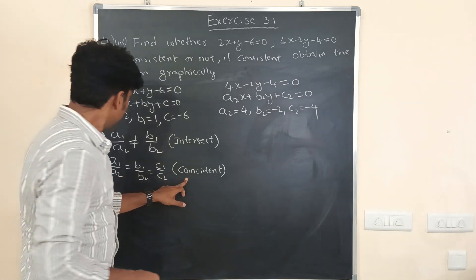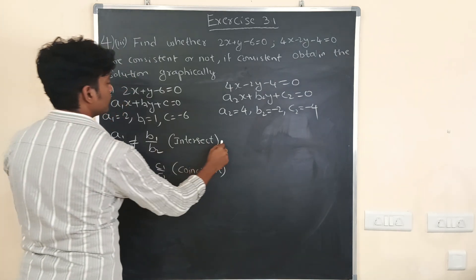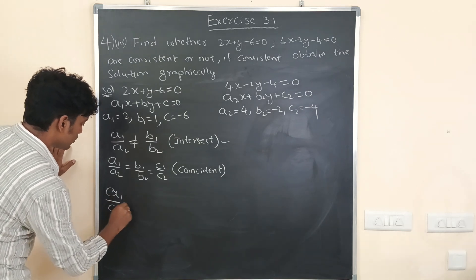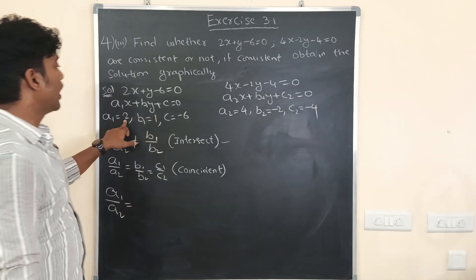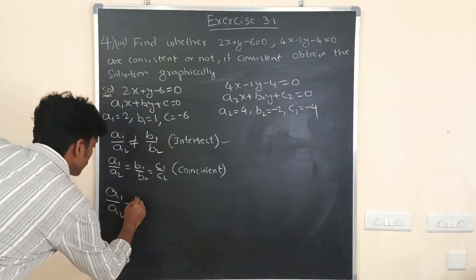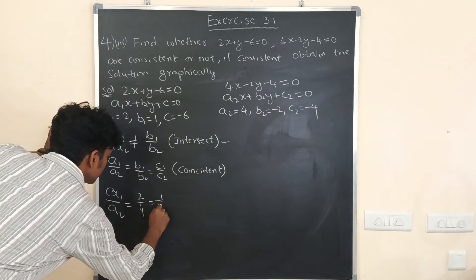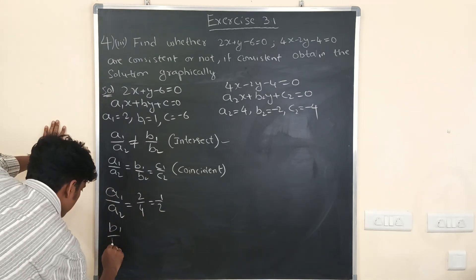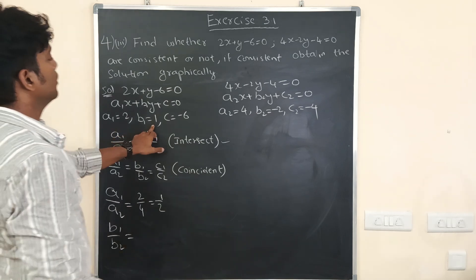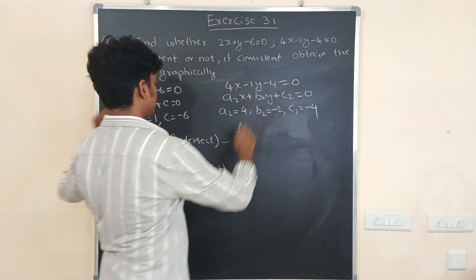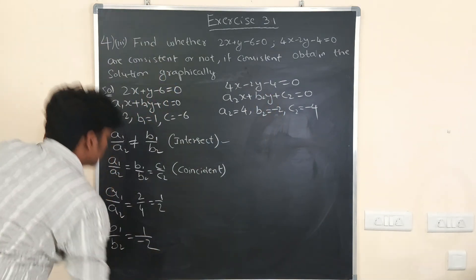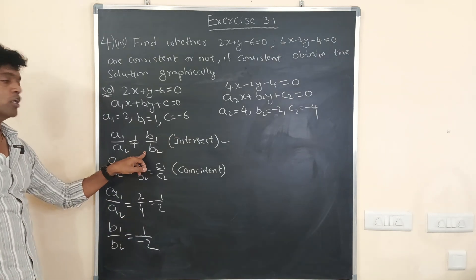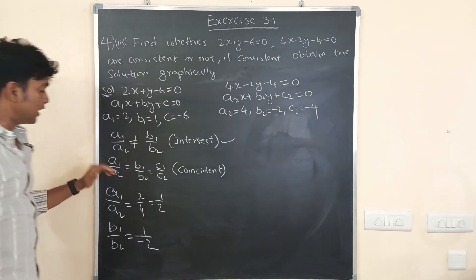Now let us check: a1/a2 = 2/4 = 1/2. And b1/b2 = 1 divided by minus 2. These two are not equal, so a1/a2 is not equal to b1/b2. This condition is satisfied, hence these two lines are intersecting lines.